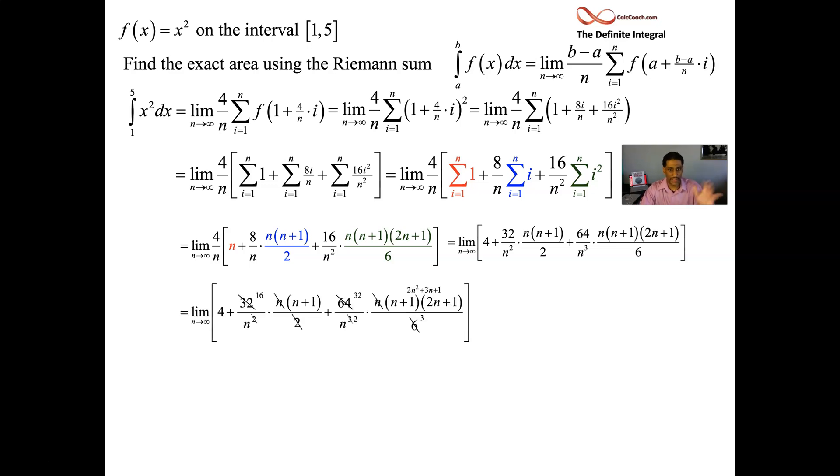Let's do some cancellation. The 32 and the two give you 16, the n's can cancel. The 64 and the six give you 32 and 3. The n can turn the n cubed into n squared. Multiplying out n plus one times two n plus one gives you that quadratic: 2n squared plus 3n plus one.